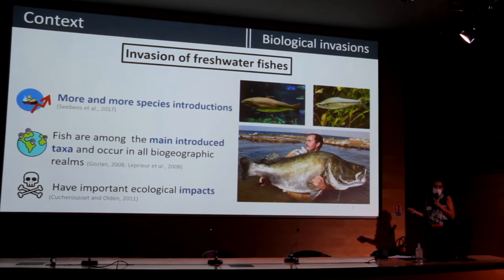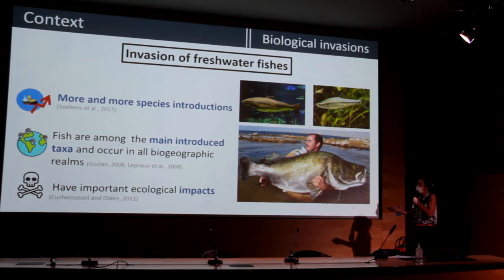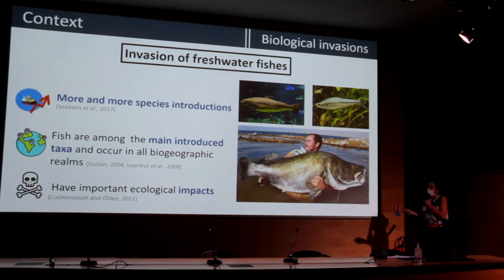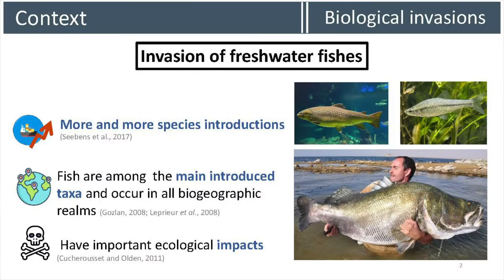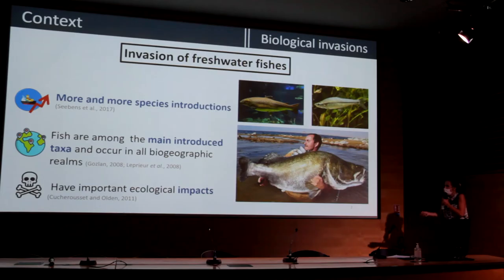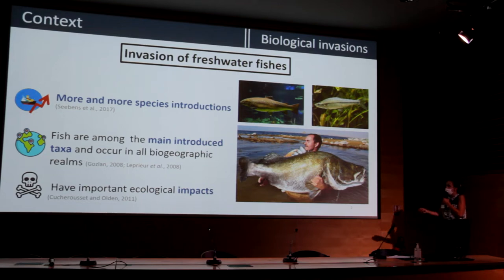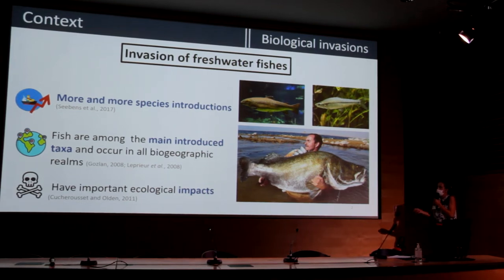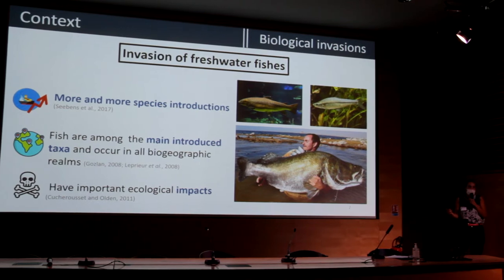The rise of global trade has led to more and more species introduction and transportation worldwide, and freshwater fish species are among the main introduced species, occurring in all biogeographical regions. These introduced species, if they become invasive, can have important ecological impacts such as the disappearance of native species.